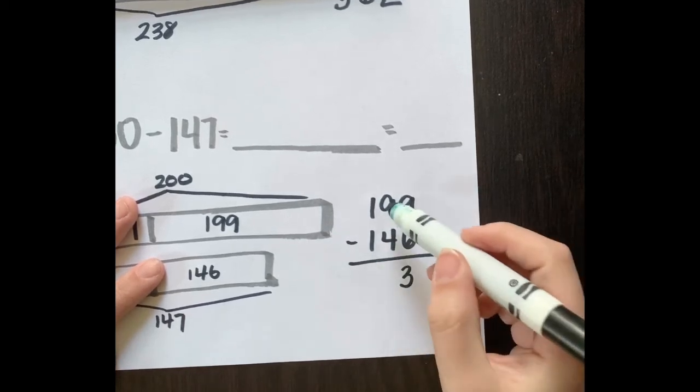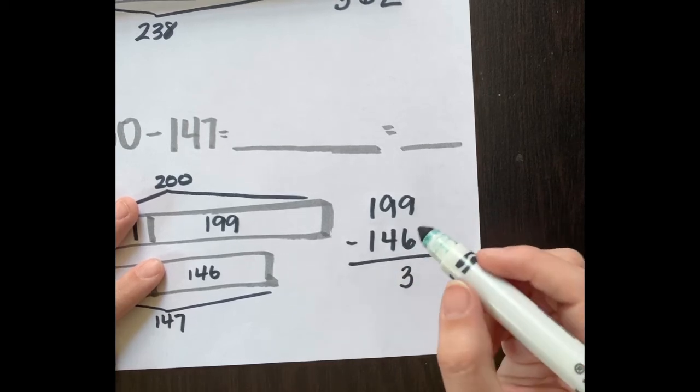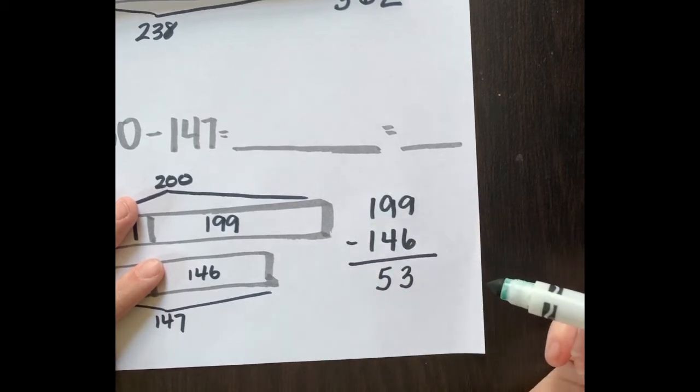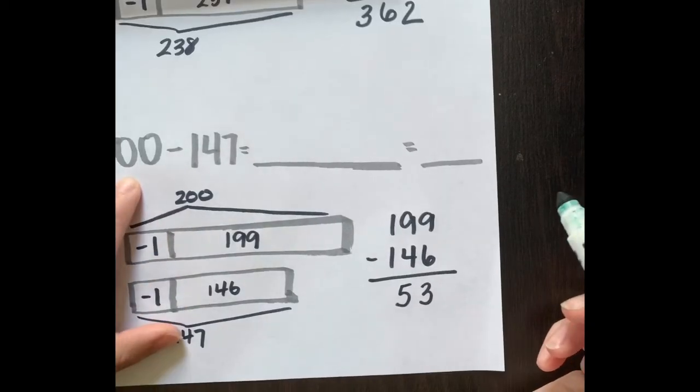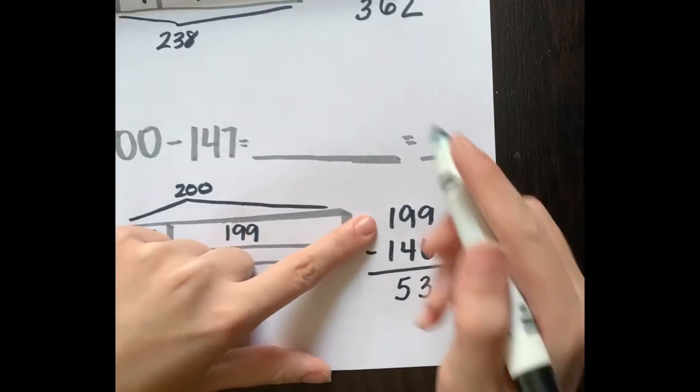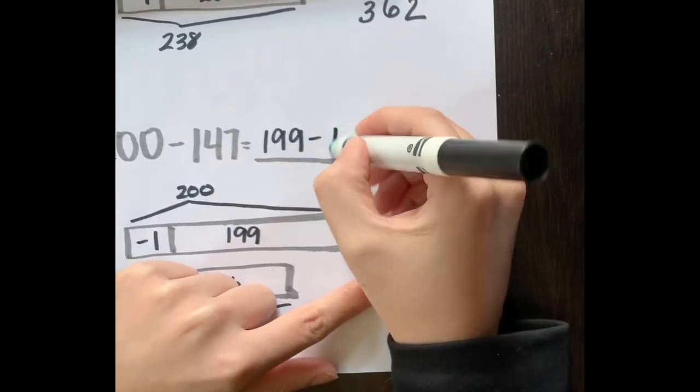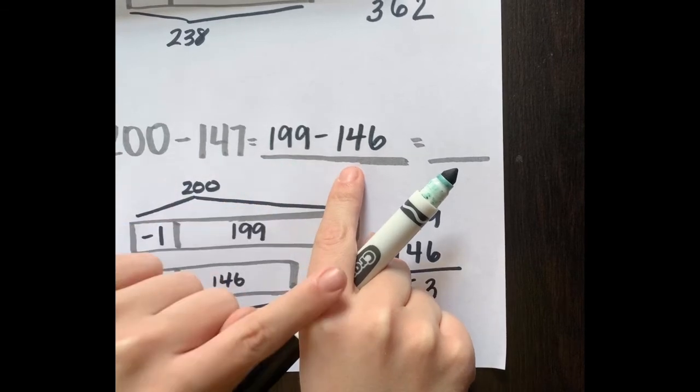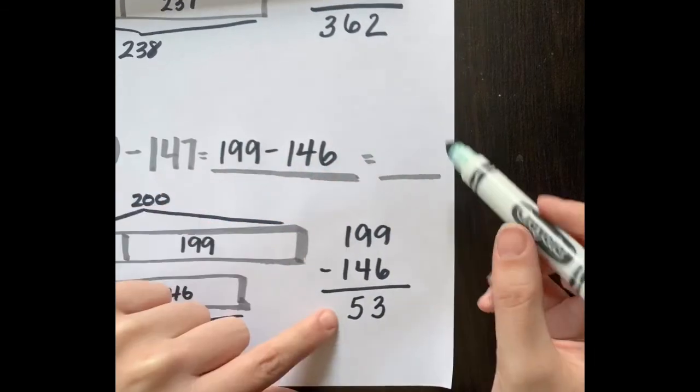Tens place: 9 minus 4 is 5. Hundreds place: 1 minus 1 is 0. So we figured out that 200 minus 147 equals 199 minus 146 using our same differences compensation, and we know that equals 53.